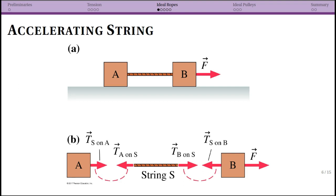In the previous section we talked about tension and made arguments about ropes or strings under equilibrium conditions, where the tension must be uniform throughout. Now we're going to talk about what happens if the rope itself is actually accelerating. This first picture shows two blocks connected together by a string, and there is a net force to the right, so there is an acceleration to the right.